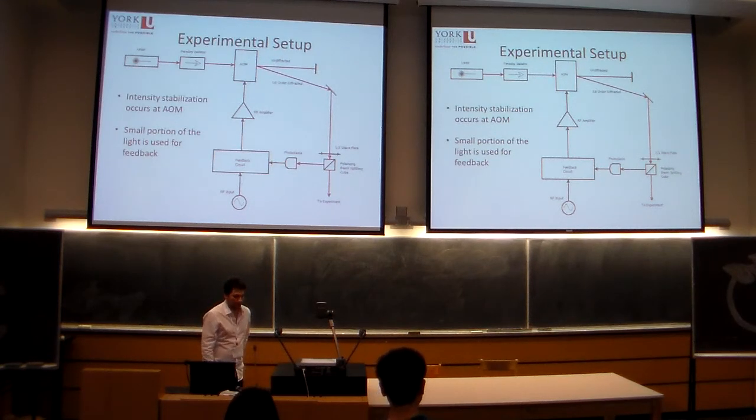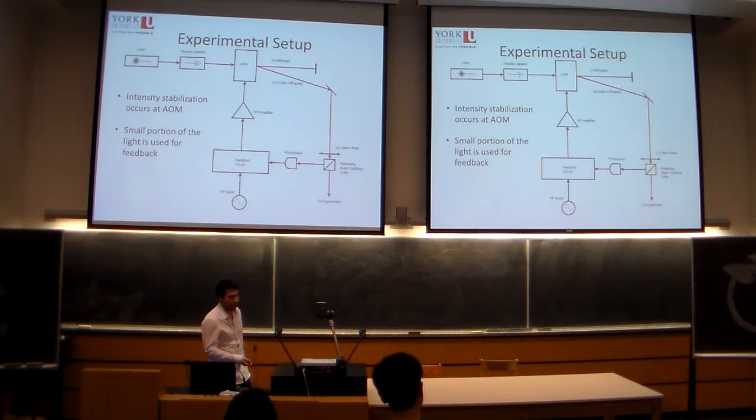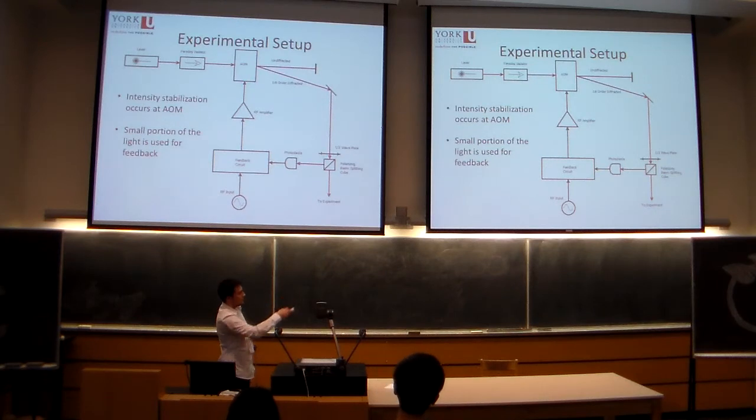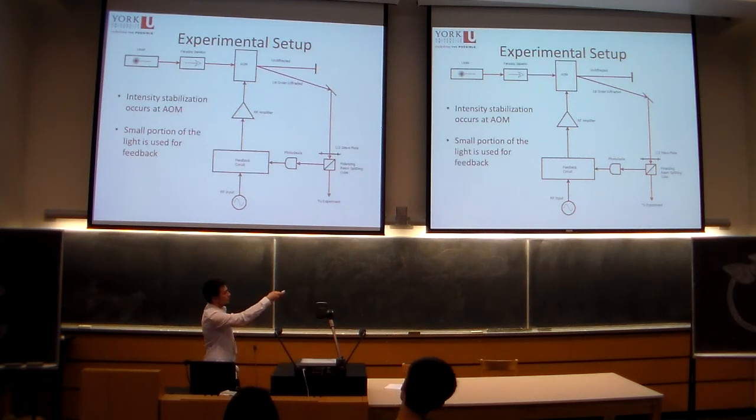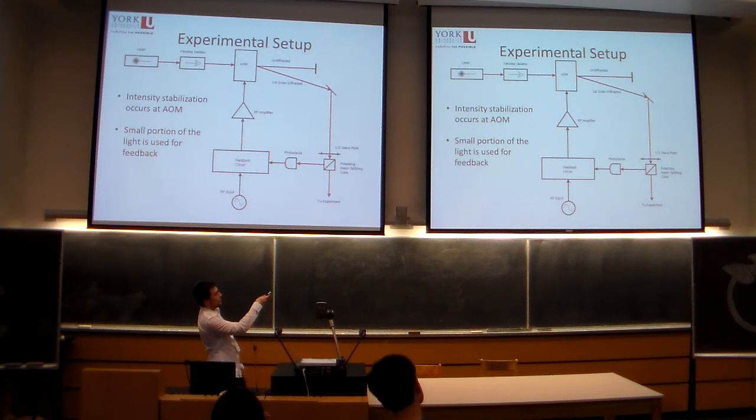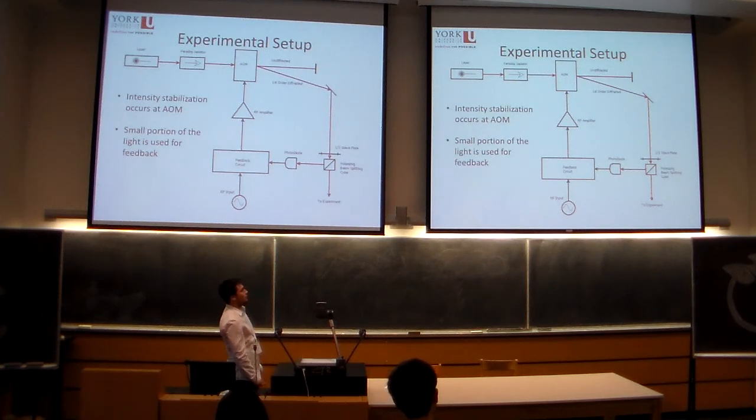We look at a small portion of the light which is picked off using this half-wave plate and polarizing beam-splitting cube combo, which just acts as a sort of beam splitter with adjustable percentages. And we use this signal as our input to our feedback circuit. And as I showed you before, it spits out a modulated RF signal which is amplified and sent to our AOM to complete our feedback loop.